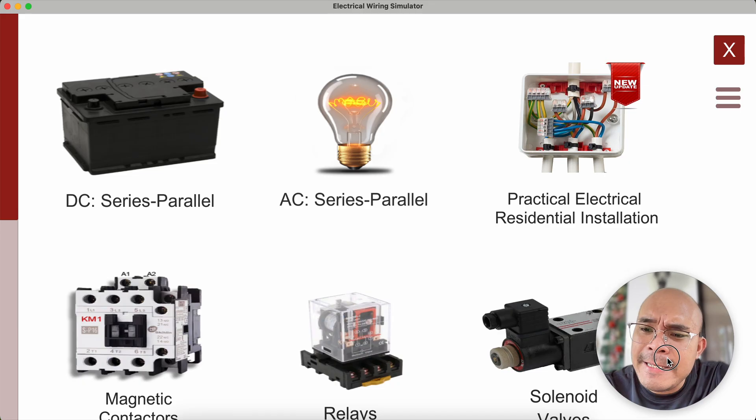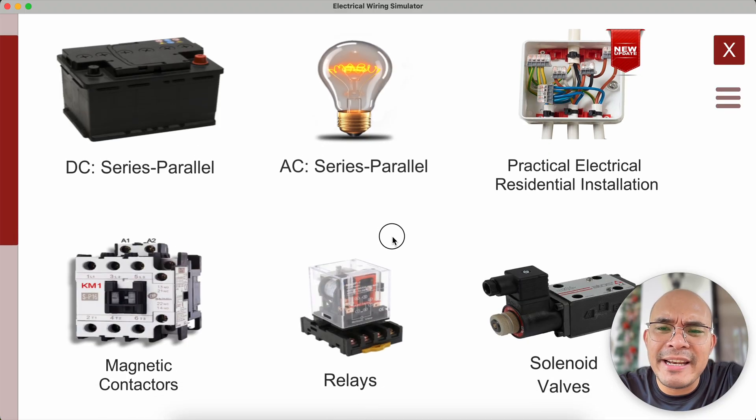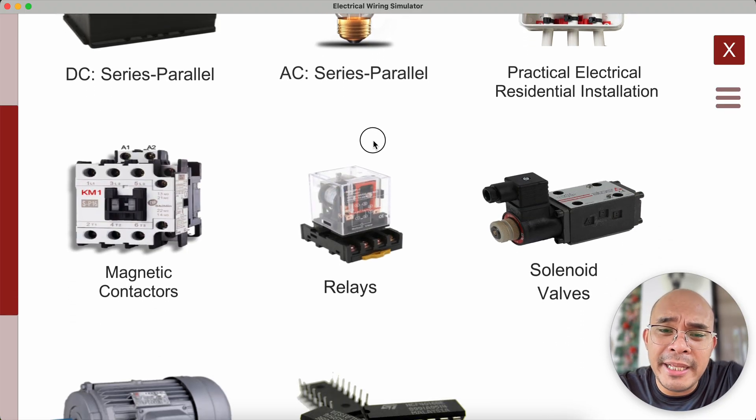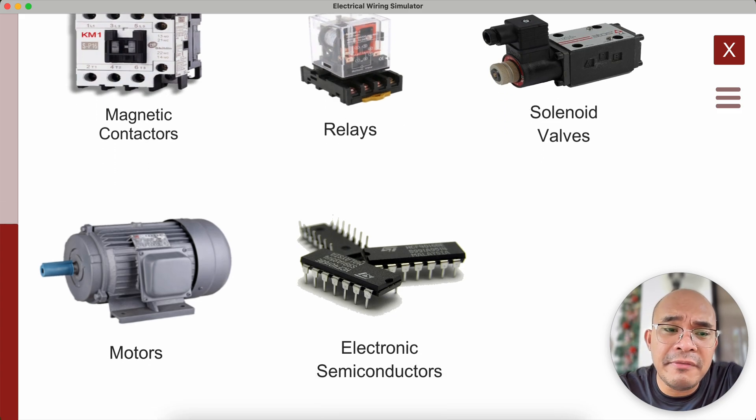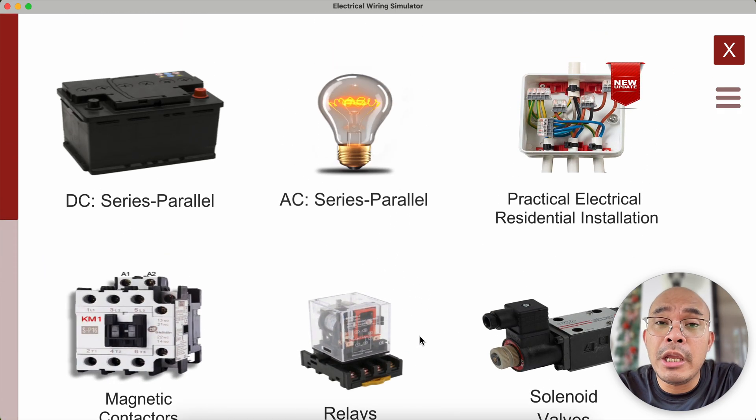The existing modules that we have as of this moment is we have the DC, AC series, the practical electrical residential wiring, the magnetic conductors, the relay solenoid valves, motors, and then the simple electronic semiconductors. But later on, if we decided that we are going to pursue this partnership, hopefully we are going to have this partnership, we can customize all of this to fit it to the institution's needs and how you want to organize your modules later on.